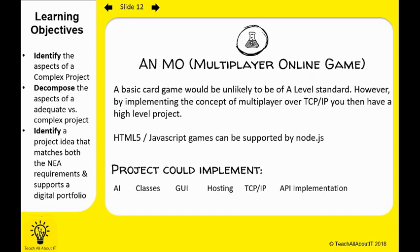MMO — multiplayer online games — is an excellent choice if you are looking for something incredibly complex. JavaScript has been massively overlooked for projects; you can absolutely use it in your A-level computer science project as long as it is complex enough. If you implement TCP/IP, you definitely have a high-level complex project. You could implement Node.js, which automatically supports TCP/IP, allowing two people on different machines to play against each other. You will need to do a lot of research and tutorials, but that is what the project is all about — investigating and creating something you are interested in.